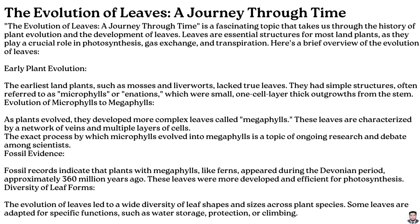Evolution of microphylls to megaphylls: as plants evolved, they developed more complex leaves called megaphylls. These leaves are characterized by a network of veins and multiple layers of cells. The exact process by which microphylls evolved into megaphylls is a topic of ongoing research and debate among scientists.